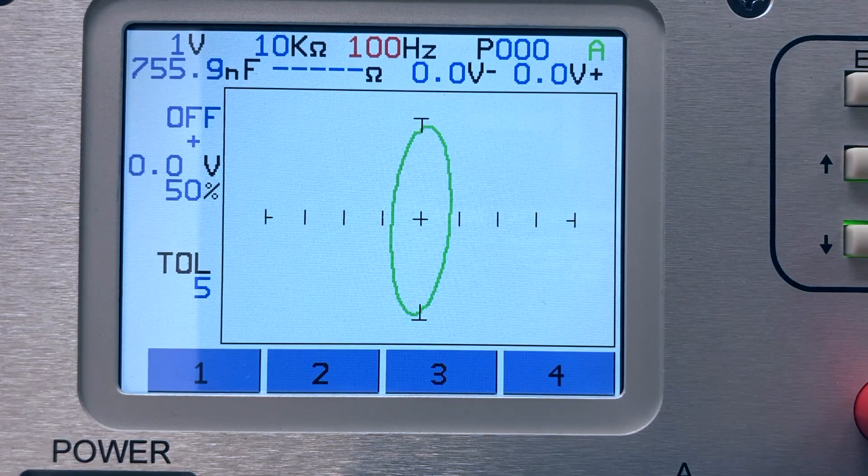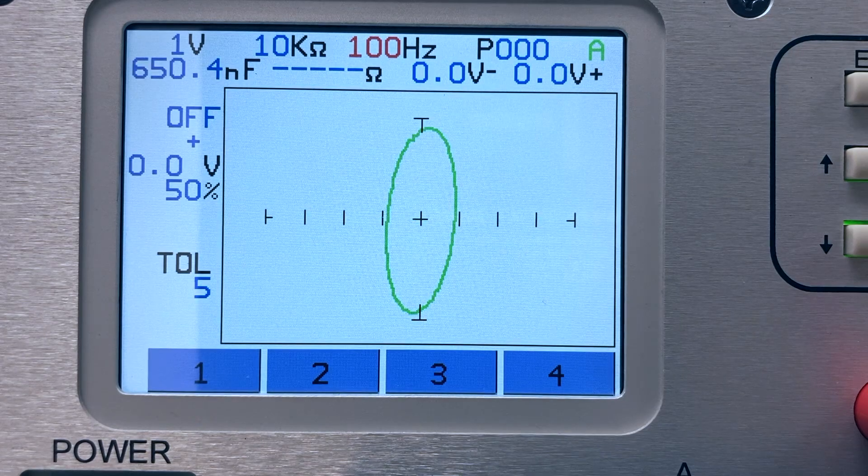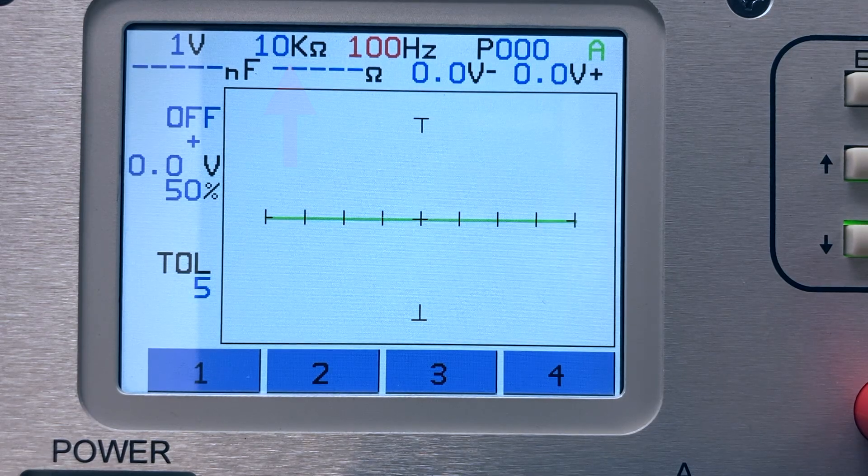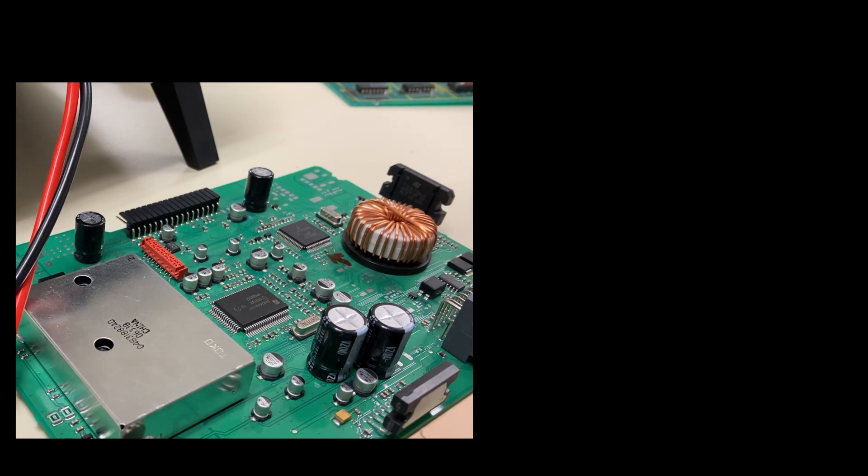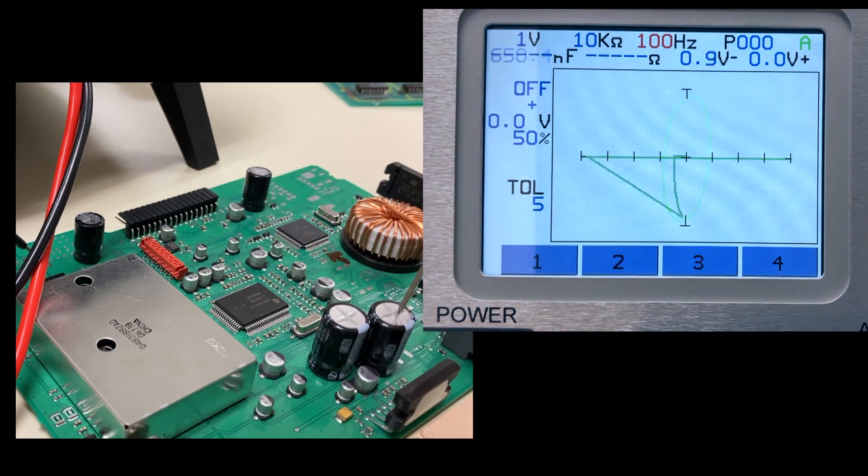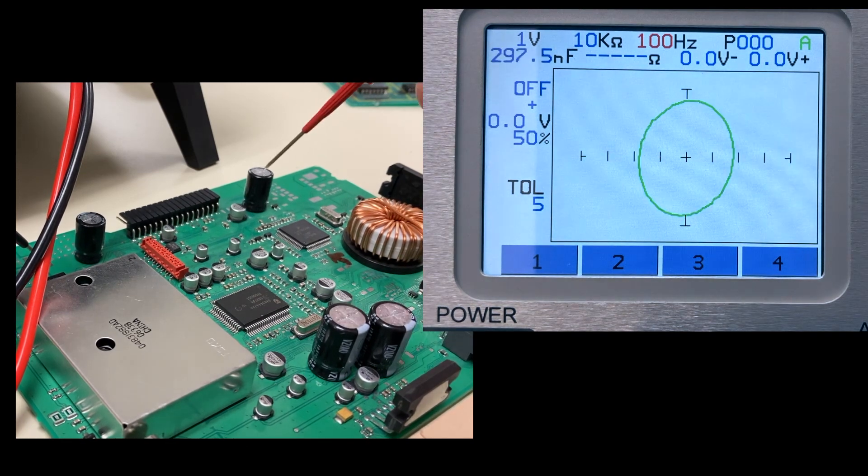A common test method for electrolytic capacitors among tracker users is to set the tracker to a 10k ohm or 20k ohm range, hold the common probe to PCB ground, and use the red signal probe to test the top of each electrolytic capacitor.